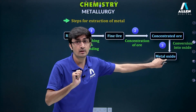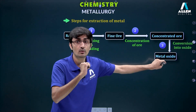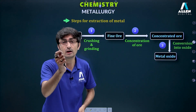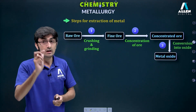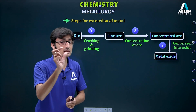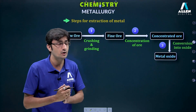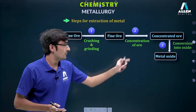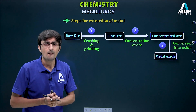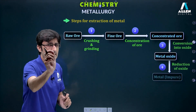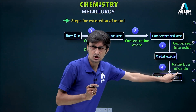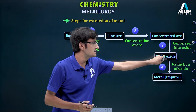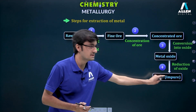If calcination is done, the calcined ore (metal oxide) is obtained. If roasting is done, the roasted ore is obtained. These terms are used throughout this video. Next, from the metal oxide, we perform loss of oxygen, which is termed reduction — to ultimately obtain the metal.